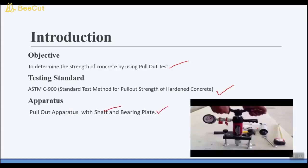This is a picture of the apparatus. So this is the pullout apparatus. This assembly is bearing plate. This is the dial gauge and this is the shaft with the help of which we applied the load on circular disc to extract it from concrete.